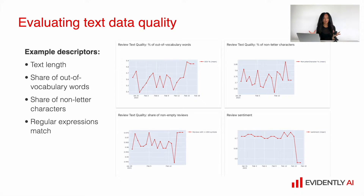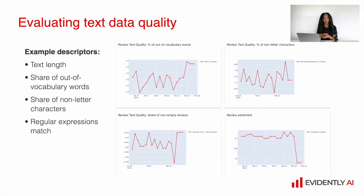It's a very straightforward and at the same time very beautiful idea. Imagine you have a dataset with raw text. For each individual text from your dataset you can calculate quite a lot of things. For example, you can measure the text length for each text and then combine it in a single column — this single column will be your text descriptor which describes the length of your text.